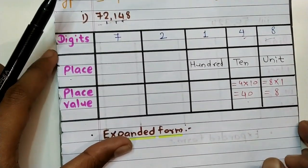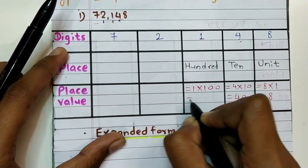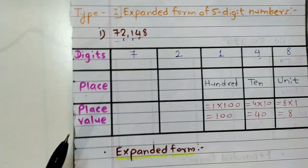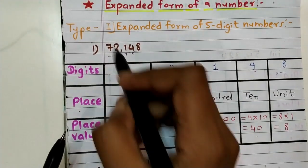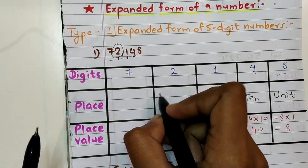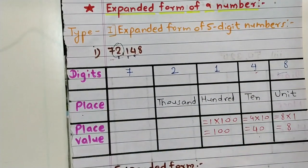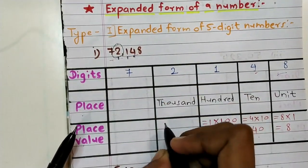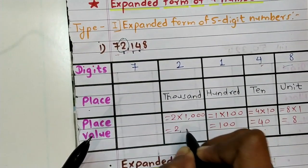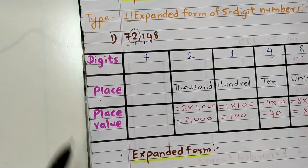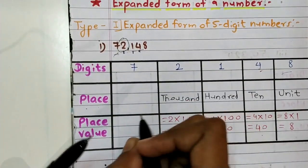Place value of one equals one into hundred, which is equal to one hundred. Next digit two is at thousands place, so here we write thousand. Place value of two equals two into one thousand, which is equal to two thousand.